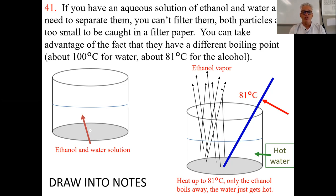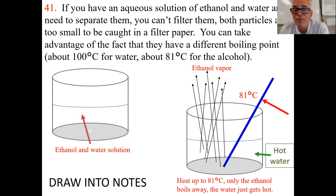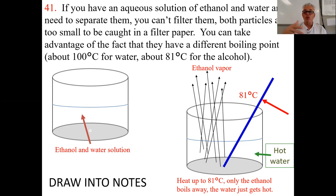A solution of ethanol and water just looks like water — you could taste the difference, but you can't see it. If you put a thermometer in and heat it up, you must limit the temperature to about 81 or 82 degrees so the ethanol will boil but the water will not. If you heat it to 100 or more, both will boil and you won't separate them. This way you can separate the solution by taking advantage of a difference in the physical property called boiling point.